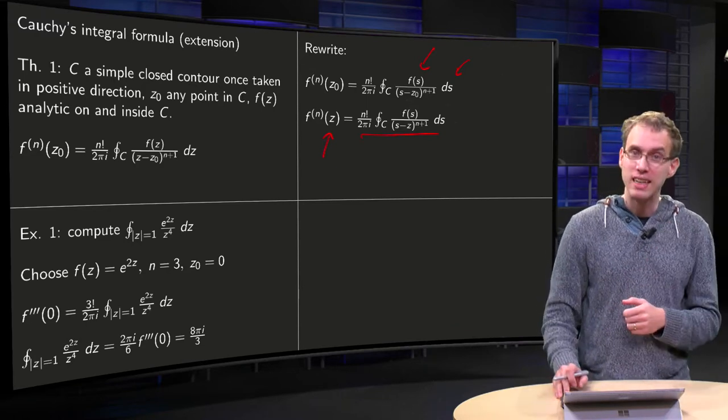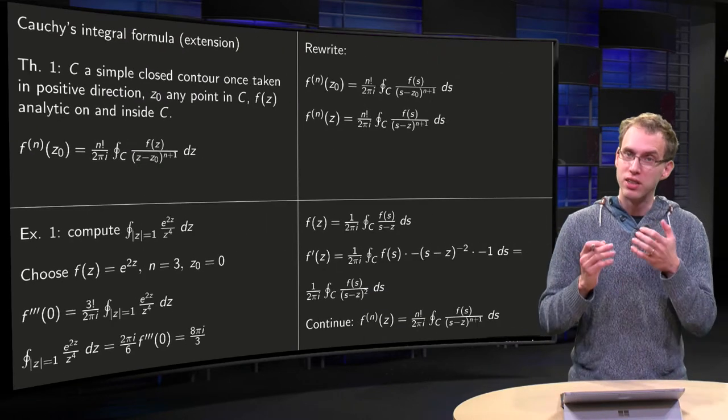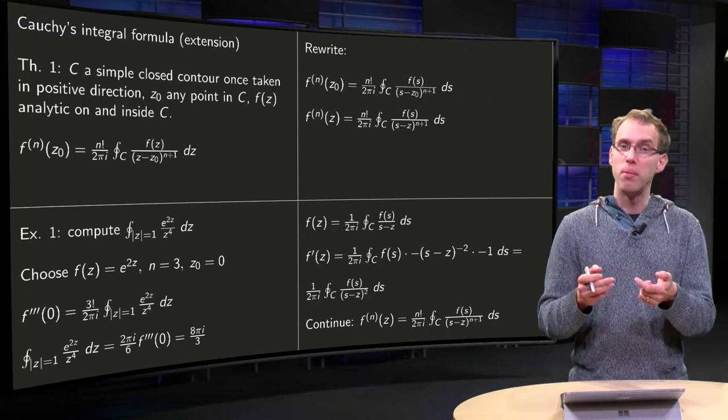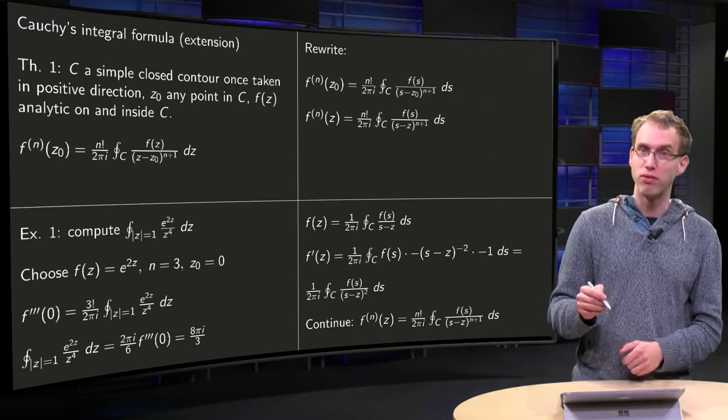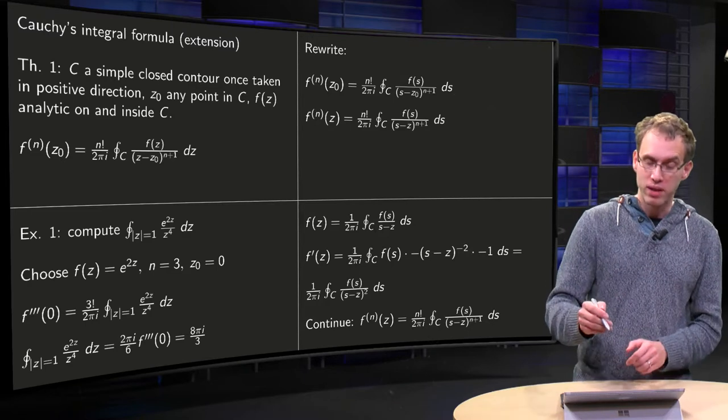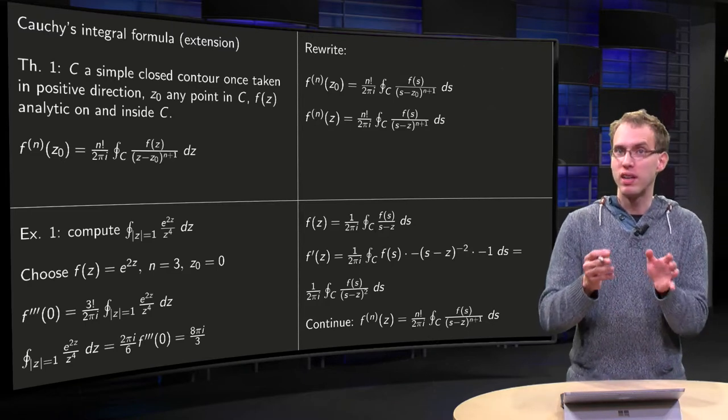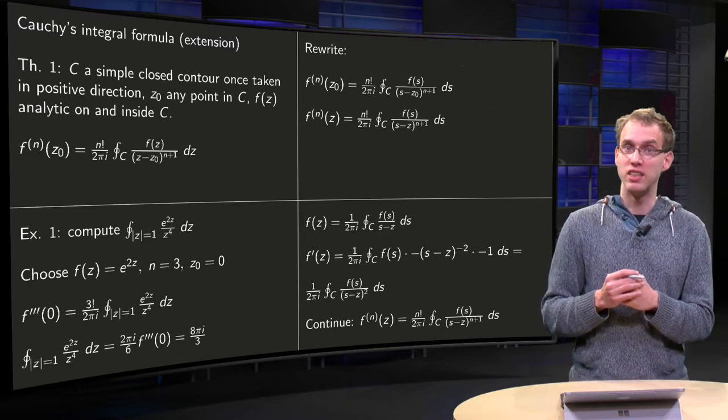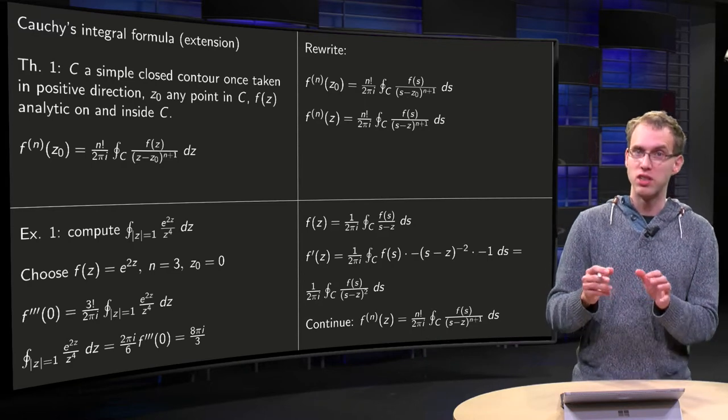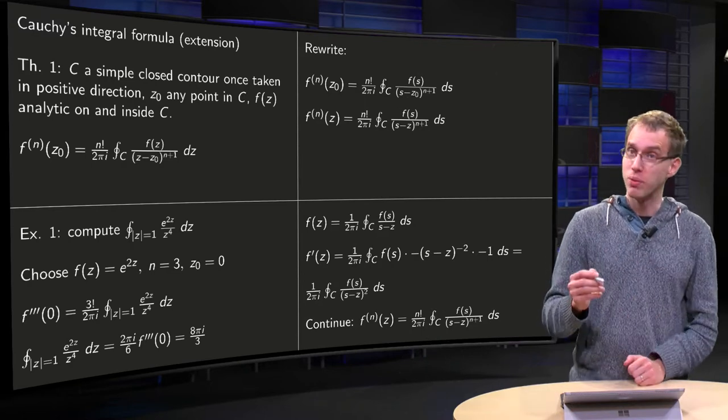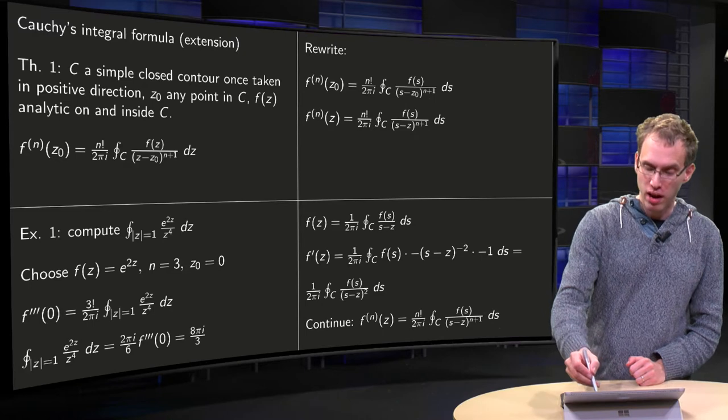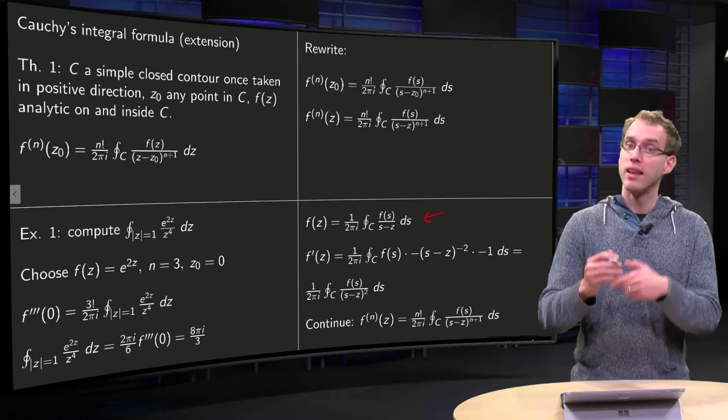So we can get now the general version by differentiating Cauchy's integral formula, where we just assume that we can interchange differentiation and integration. So this is the kind of sloppy proof. So what happens if you do that? Here you have Cauchy's integral formula, then you differentiate,